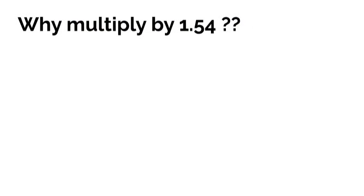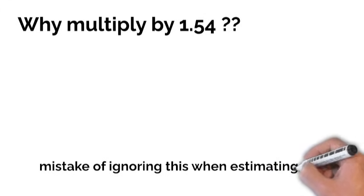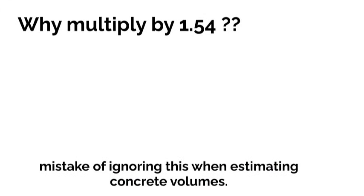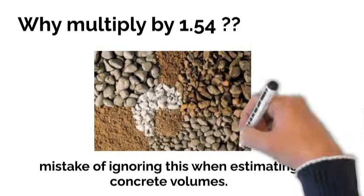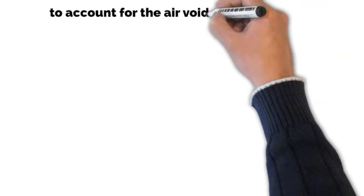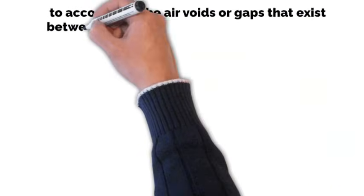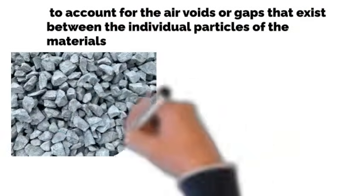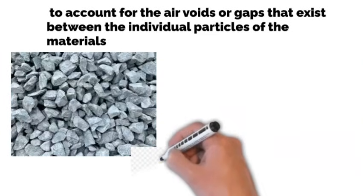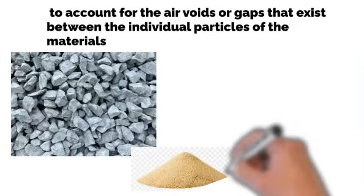Now, back to the factor of 1.54 that was used to multiply the wet concrete volume. I see some people making the mistake of ignoring this when estimating concrete volumes. The reason for multiplying the wet concrete volume by a factor of 1.54, which gives us the volume of the required dry mix, is to account for the air voids or gaps that exist between the individual particles of the materials used to make the concrete. These voids can occur due to the irregular shapes of the particles and the spaces between them.